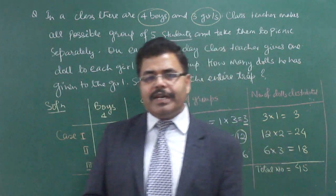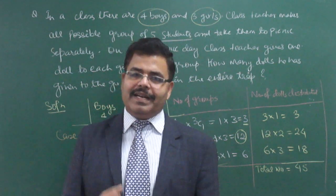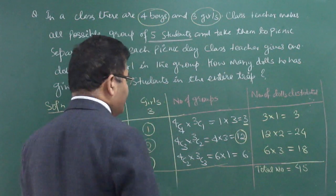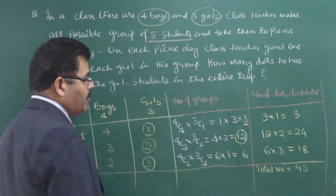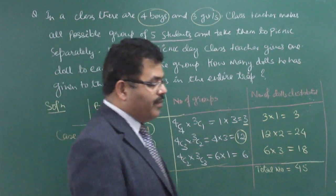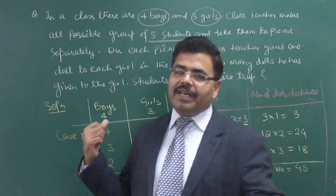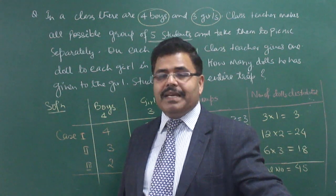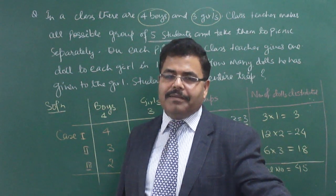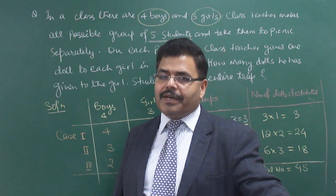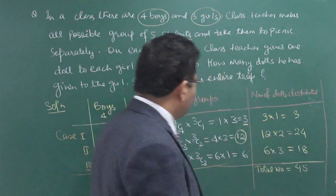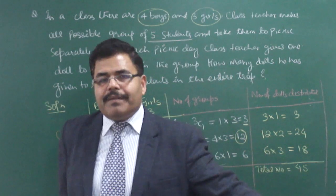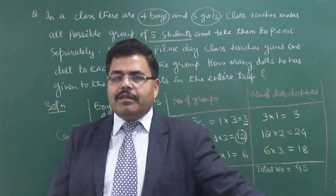So, all students making a group of 5 at a time and going for a picnic — every time the teacher has to give dolls, and the total number of dolls distributed is 45. I hope you got it. Very good and interesting question — this has been asked in competitive examinations many times. Some more questions we can discuss in upcoming classes. Thank you very much for watching. Thanks a lot, God bless you.